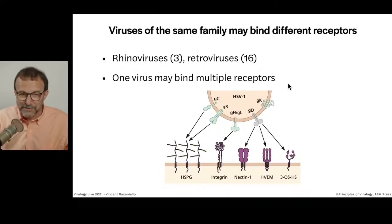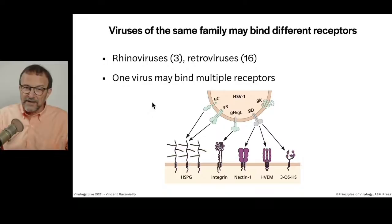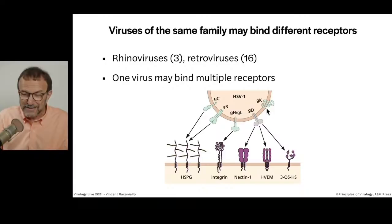Viruses of the same family may bind different receptors — many different rhinoviruses seem to bind three different kinds of receptors, and many retroviruses bind 16 different receptors. And one virus may bind multiple receptors: herpes simplex virus type 1 has no less than five glycoproteins in its envelope, each able to interact with a different plasma membrane protein.